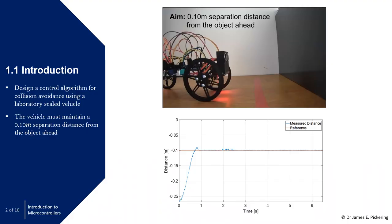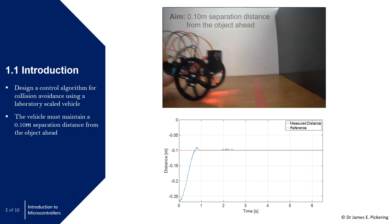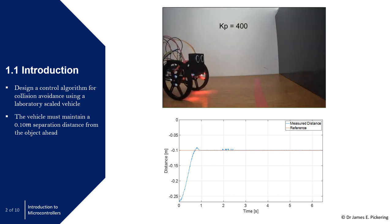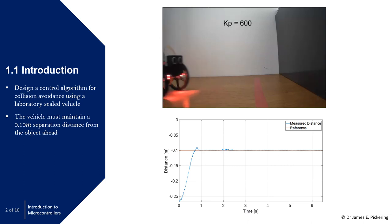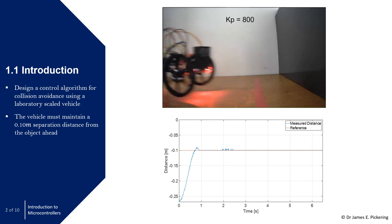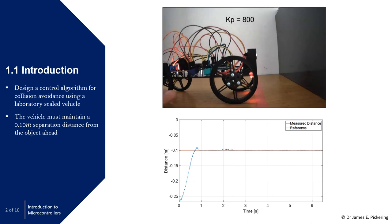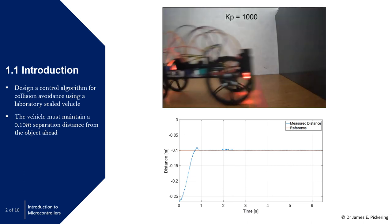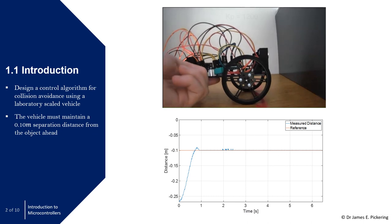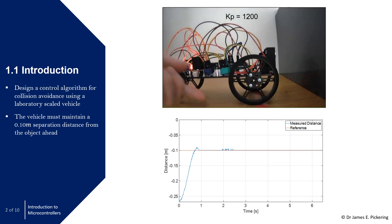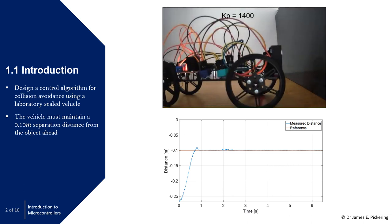As a motivational example running through this lecture, we're going to design a control algorithm for collision avoidance using a lab-scaled vehicle. The aim is to achieve a 0.1 metre separation distance from an object ahead. In this video, the scaled car is moving towards what looks like a wall, running through different values of KP, the proportional control gain.